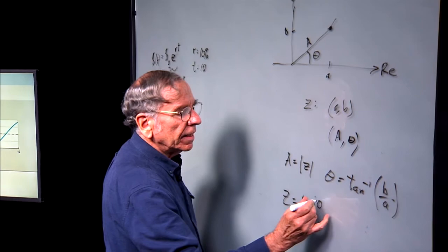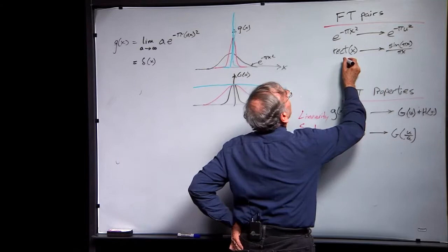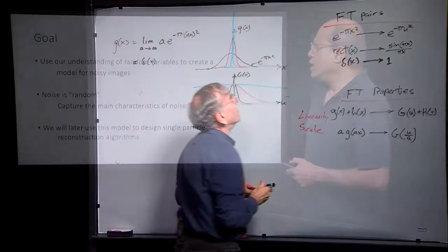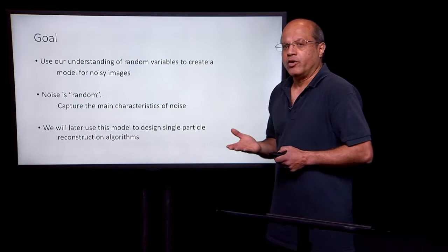And we can say that z is equal to the amplitude times e to the i theta. From the scale property, we can deduce that delta of x has the Fourier transform one value.